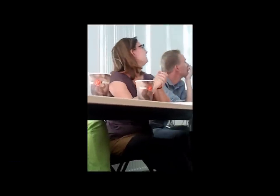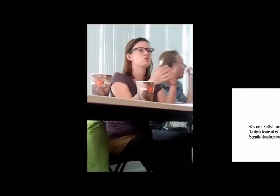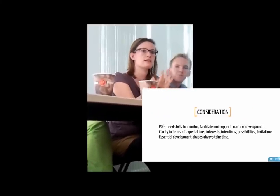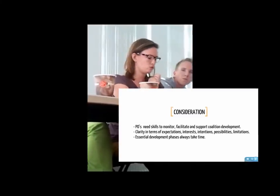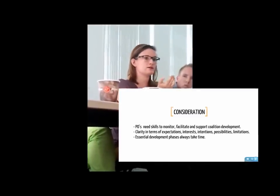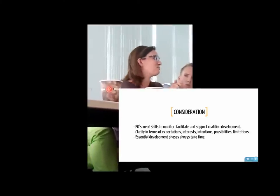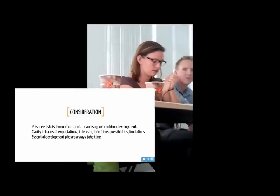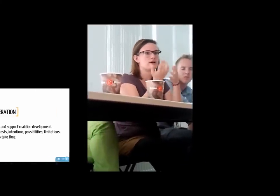Some considerations: first, the program officer or someone close to the coalition needs the skills to monitor, facilitate, and support the coalition — especially to see which coalition needs a lot of support and which can function more independently. Then there needs to be clarity — and that was a word that came back every day — in terms of expectations, interests, intentions, and possibilities from all sides: first between the coalition and ICLE, and second between the coalition members themselves.